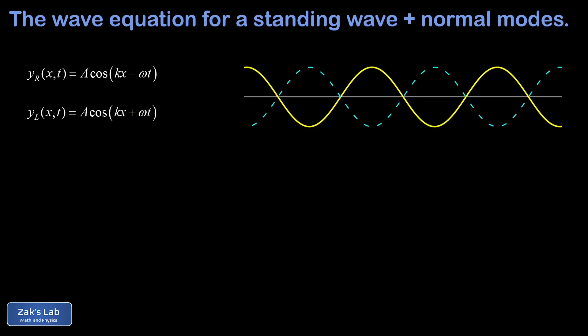But we have to be careful about reflections. We've learned previously that reflections at a fixed end are inverted, and our leftward-traveling waves are reflections of yr. We can deal with this mathematically by giving the reflected wave a minus sign.